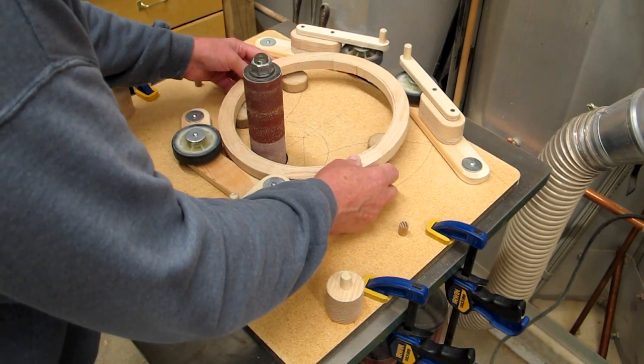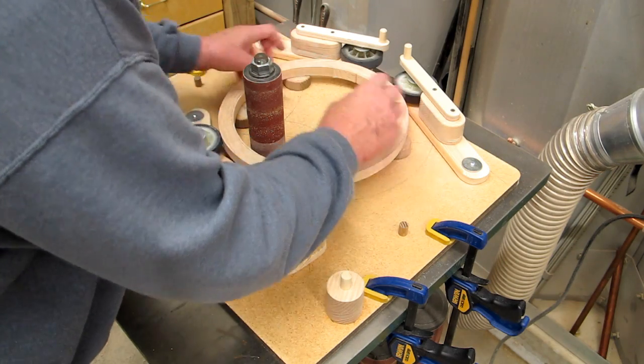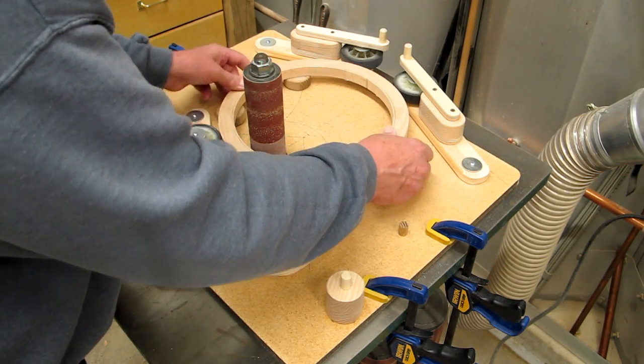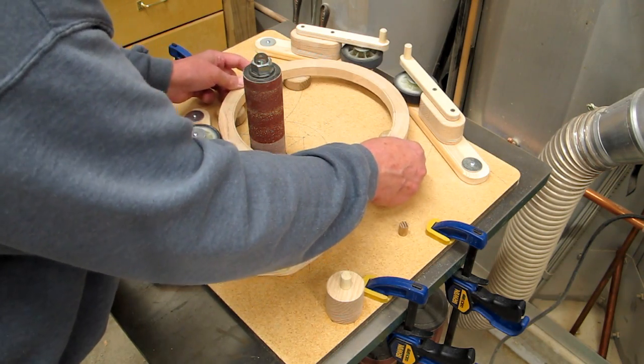Take the wood ring, place these hockey pucks underneath here. Their job is just to be slippery and to let that ring turn freely.